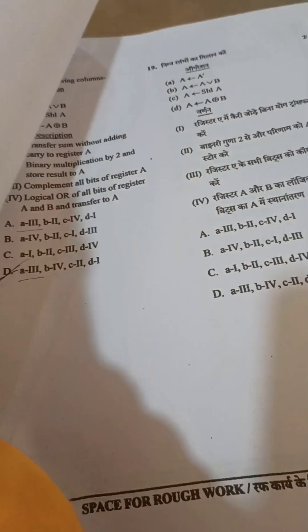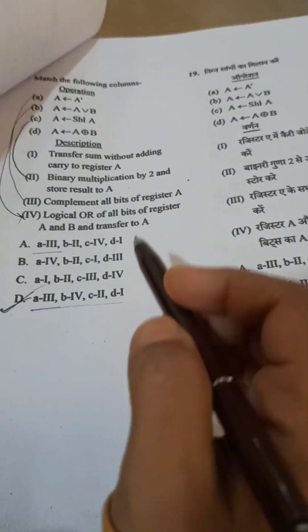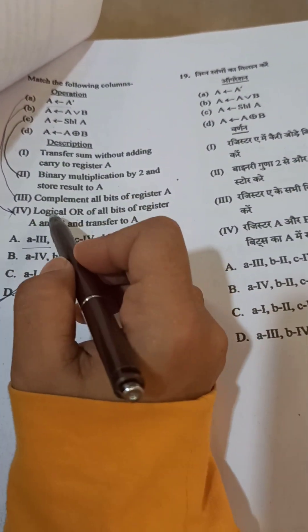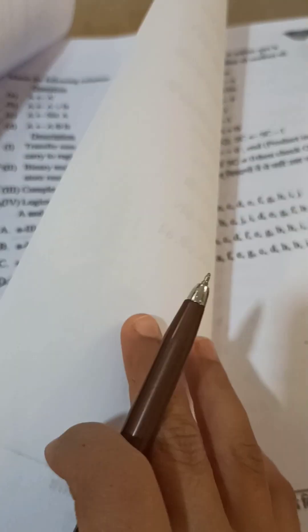Now you can go to question number 19. Here this one should be the correct answer because definitely this is complement. It is matching with this. So option D, this one should be the correct answer.